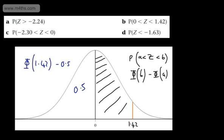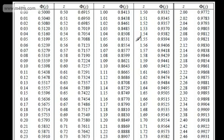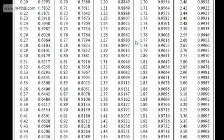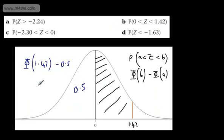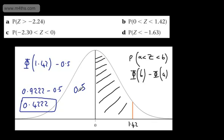So let's look at our table. Phi of 1.42. So where are we? 1.42 is down here. So we've got now 0.9222. So what we'd have then is the following. We'd have 0.9222 minus the 0.5. 0.5 is the area trapped under the curve to the left of 0. So we end up with 0.4222. So the probability that Z is between 0 and 1.42 is 0.4222.